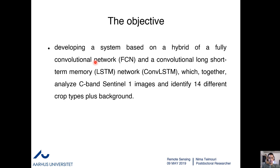The objective of this part of the project — and the paper we recently published in the Remote Sensing journal — is developing a system based on a deep learning approach which analyzes C-band Sentinel-1 images to identify 14 different and important crop types in Denmark, plus background. The background is one of the interesting and also hard classes because it includes subclasses like road, building, lake, sea, and forest. The variance between these subclasses is high, making it difficult to train the network, but the results showed that our approach could train very well and separate the background from other classes with high performance.